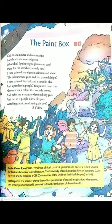In this poem, the speaker shows the endless possibilities of art and imagination, wherein you can create your own world unrestricted by the limitations of the real world. The basic theme of this poem is that people usually prefer imagination instead of reality — everybody likes the world of imagination over reality. It's a philosophical poem. First I will tell you the meaning of the poem line by line, and then I'll tell you the basic theme.